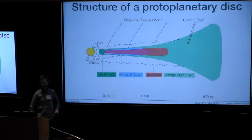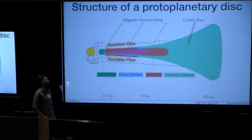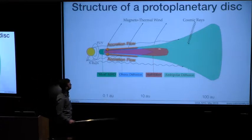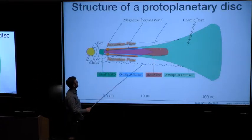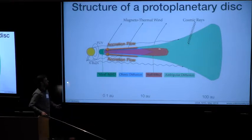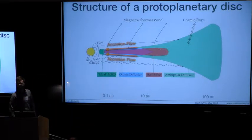It probably gets driven by a magnetothermal wind, which mainly drives an accretion flow across the top layer, leaving the mid-plane in the dead zone region, where we want to do a lot of our planet formation, relatively unmolested by viscous effects like turbulence.